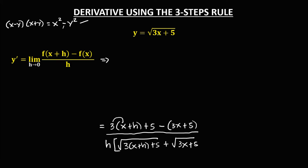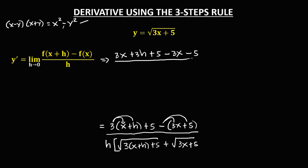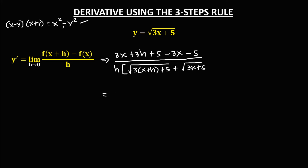Simplify the numerator by distributing: 3 times x gives 3x, and 3 times h gives 3h, plus 5. For the second group, distribute the negative: negative 3x and negative 5. So the numerator becomes 3x plus 3h plus 5 minus 3x minus 5. Positive 3x and negative 3x cancel to 0; positive 5 and negative 5 also cancel to 0.